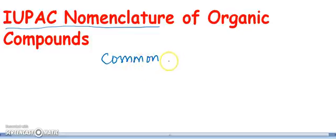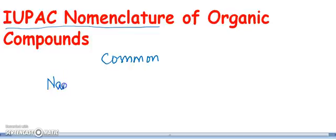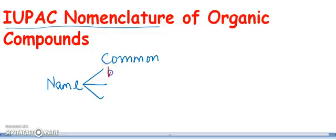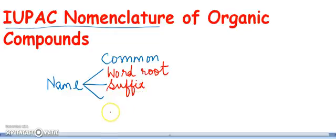Now let us see what are the general rules for IUPAC nomenclature. According to the IUPAC system, the name of an organic compound consists of three parts. The first part is the word root, the second part is the suffix, and the third part is the prefix.